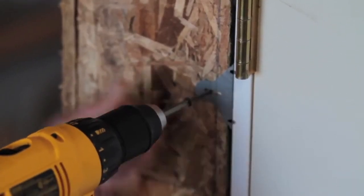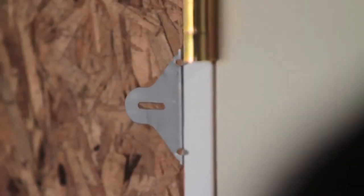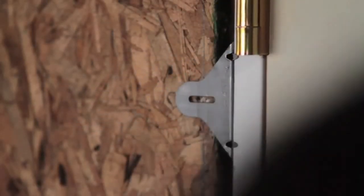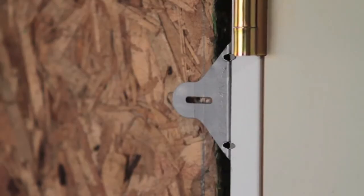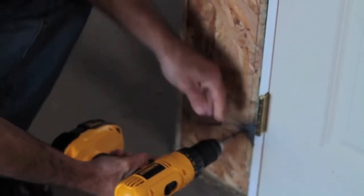Work your way down the hinge side of the door using the same line on the bracket that you used on the top bracket, so all three brackets use the same line.